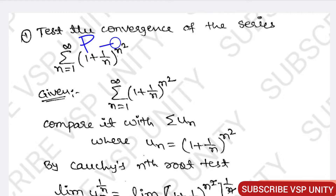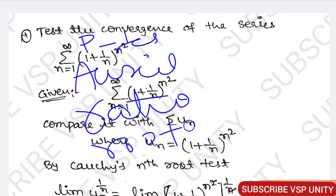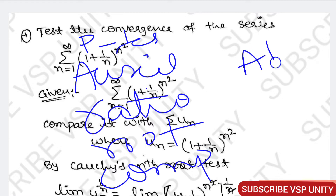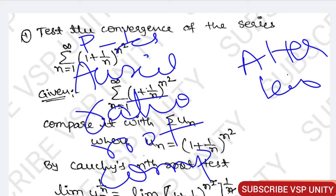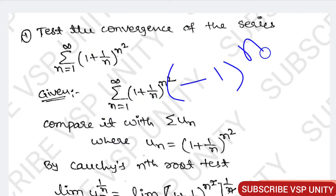In total we have 7 types of tests: p-test, auxiliary series test, ratio test, root test, comparison test, and alternating series test. The alternating series test is a separate topic — it is easy to identify because alternating means the question will have plus and minus terms, and the question will clearly mention (-1)^n, (-1)^(n+1), or (-1)^(n-1).